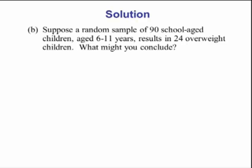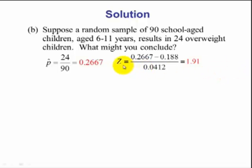Let's look at part B. Suppose a random sample of 90 school-aged children aged 6 through 11 resulted in 24 overweight children. What might you conclude? We compute our p hat, x over n, which is 0.2667. We change that to a z-score. We take 0.2667 minus the mean 0.188 and divide it by the standard deviation. We get a z-score of 1.91.